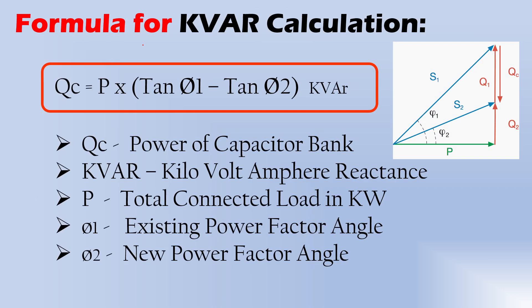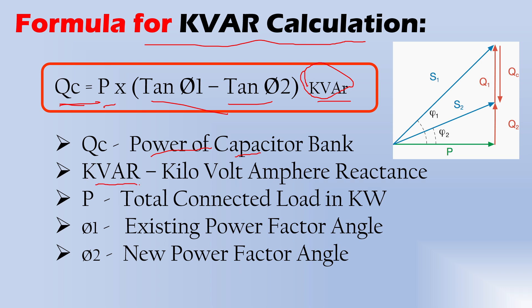Next, the formula for capacitor bank calculation — that is kVAR calculation. The formula is: QC = P × (tan φ1 − tan φ2) kVAR. This kVAR is the rating of the capacitor bank. QC means the power of the capacitor bank — the rating or the total power of the capacitor bank, how much you need.